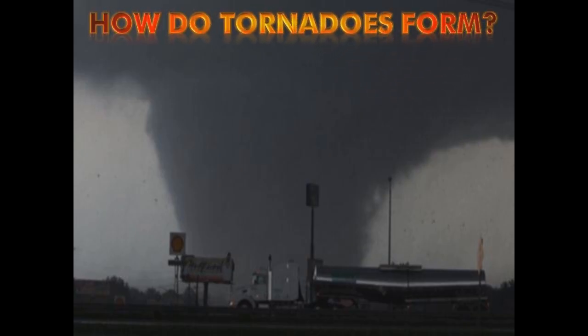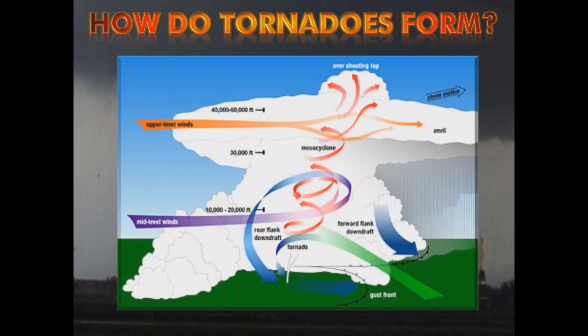Tornadoes form in thunderstorms that contain strong updrafts — strong columns of air rising rapidly into the storm. These updrafts can interact with a wind field aloft and begin to create wind shear, which is a change in wind speed or direction with height. As the updraft gets stronger, this horizontal spinning can become vertical.